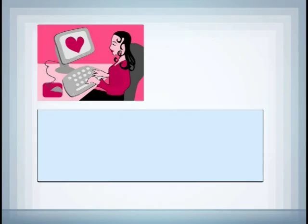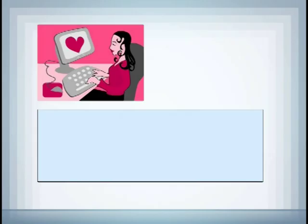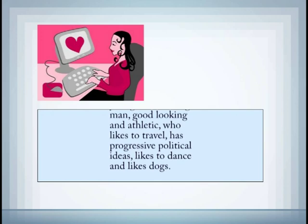But suppose our matching formula was much more complicated. Dear Make-A-Date, I am looking for a young to middle-aged man, good-looking and athletic, who likes to travel, has progressive political ideas, likes to dance and likes dogs, or he can just be really rich.